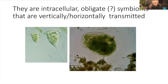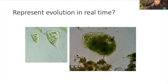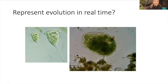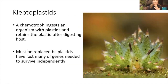Endosymbionts are symbionts that are vertically or horizontally transmitted from parent cell to offspring cell. If they're vertically transferred, it means that the gametes actually produce them. If they're horizontally transmitted, that means that the embryo or zygote picks them up directly from the environment. Some people think that these examples - like a Vorticella that takes in endosymbionts - represent evolution in real time, because eventually what is two organisms might become one organism.